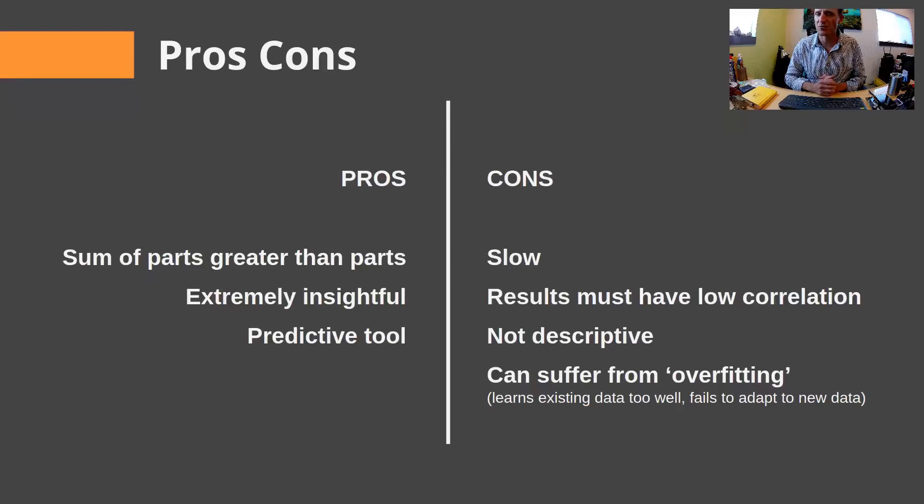The cons are that this is a very slow model to run. It's incredibly computationally intense. The results must have a low correlation. It's not very descriptive and it can suffer from overfitting. What those mean is, think of this as a choose your adventure model from the 1980s or choose your adventure book from the 1980s where, at some point, if it's a poorly written choose your adventure book and you always end up dead or you always end up not succeeding in the book, you won't read the rest of the book. And that's exactly what happens in a random forest model. If the result happens to be too often one result, then the random forest model will be skewed and we call that overfitting and it doesn't matter what any of the other tweaks are. It will always tell you that that's the one result. So you must have a data set that has a high variety.